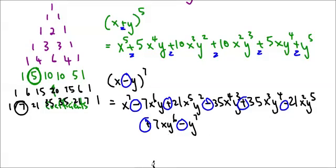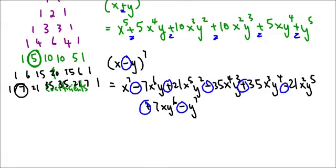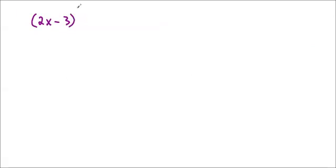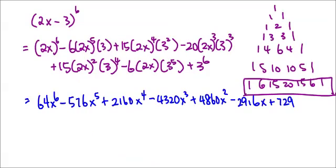I'll give you one more to try on your own — pause the video and try this: 2x minus 3 to the 6. When you expand it with the alternating minus, plus, minus, plus, minus, plus pattern, you'll get 2x to the 6, 2x to the 5, and so forth. Make sure you're careful — this 2x means you need 2 to the 6 times x to the 6, so be sure to handle the coefficients as well as the powers.